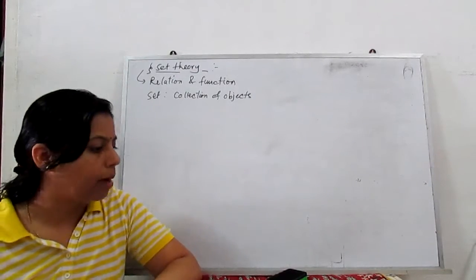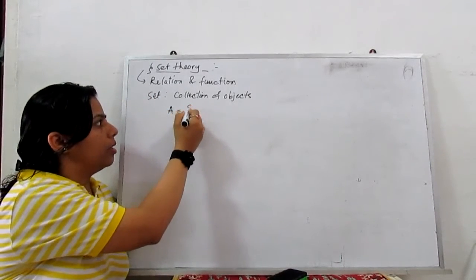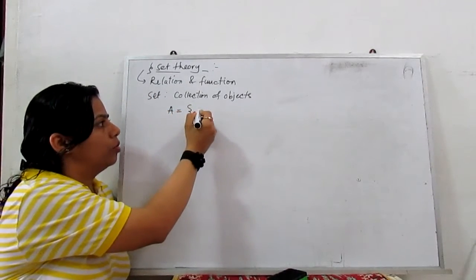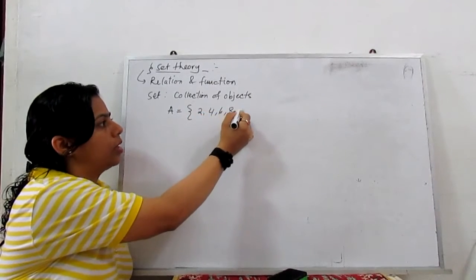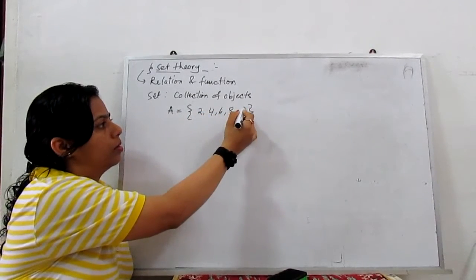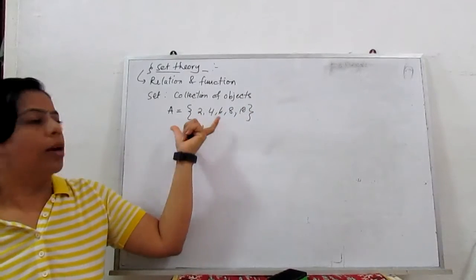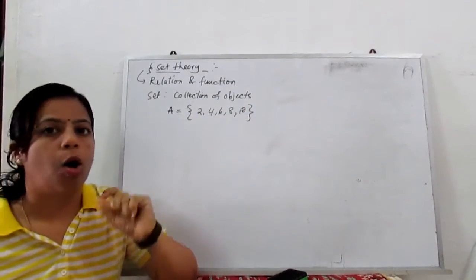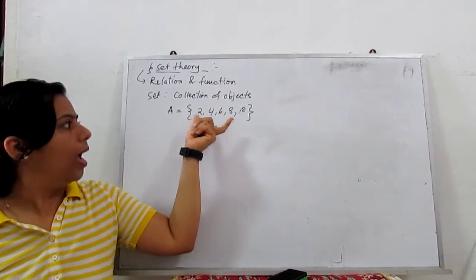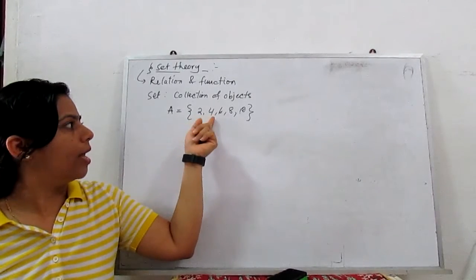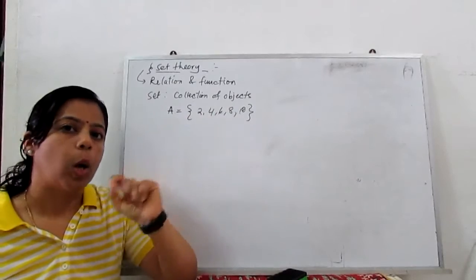For example, a set is written as A equal to {2, 4, 6, 8, 10}. So this is called a set. Always a set is closed in two brackets and all the elements of the set are separated by a comma.